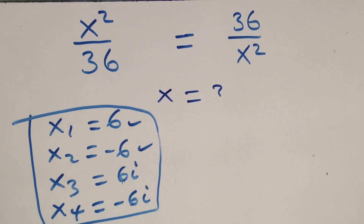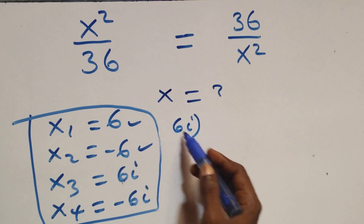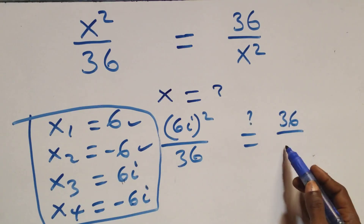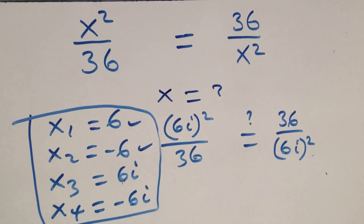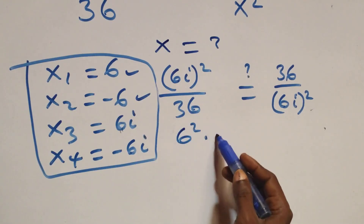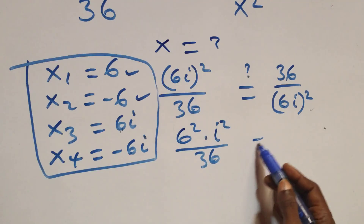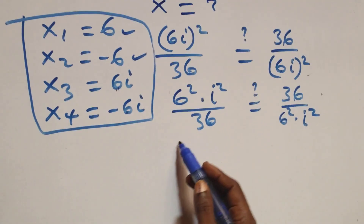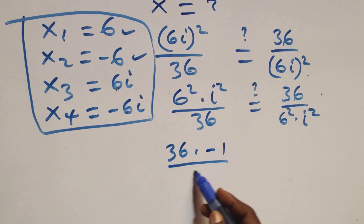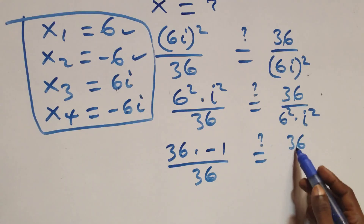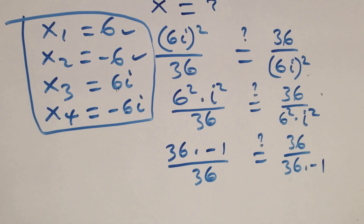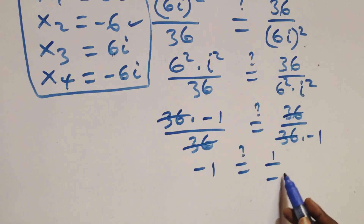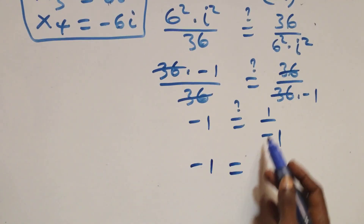Substituting x = 6i: the equation becomes (6i)² over 36. Squaring gives 6² × i² = 36i² = 36(−1) = −36. So the left side is −36/36 = −1. The right side is 36 over (6i)² = 36/(−36) = −1. Left-hand side equals right-hand side, confirming x = 6i satisfies the equation.